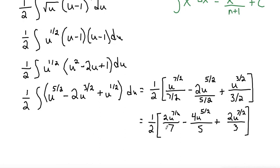And then I can distribute my 1 half in, and that will cancel out the 2 in this term, so that makes u to the 7 halves over 7 minus, that'll cancel out 1 of the 2's in the 4, so 2u to the 5 halves over 5, and then plus this 2, I'll cancel that 2 out, u to the 3 halves over 3.